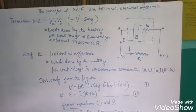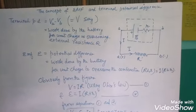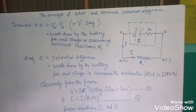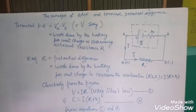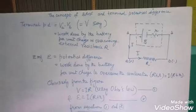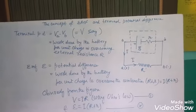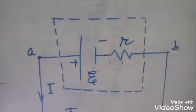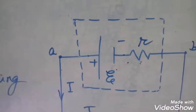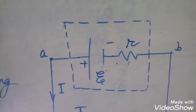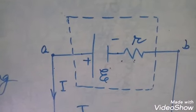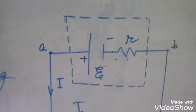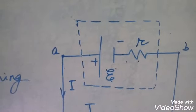Hello students. In this video we shall be learning the concept of electromotive force or EMF, terminal potential difference, and the internal resistance of a cell or a battery. The circuit element represented inside the dotted square is a cell or a battery with an EMF E and internal resistance r. A and B are the terminals of the cell.